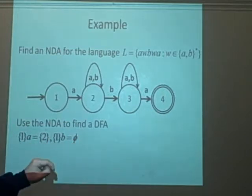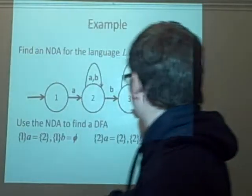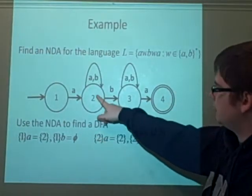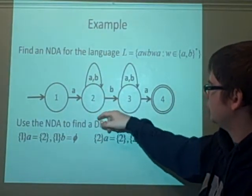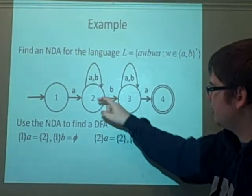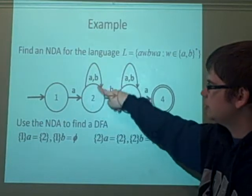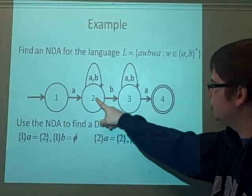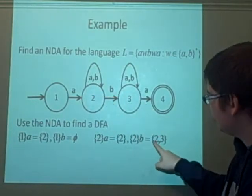Also, 2 is a new state. So if we use 2 now and apply A, you'll see what happens. We can either stay in 2, or that's it, we stay in 2. So 2 is a state, that's fine. If we apply B to 2, we can either go to 2, stay in 2, or we can go to 3. So this is a new state here, 2, 3.